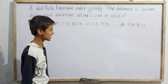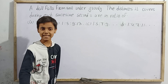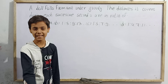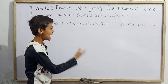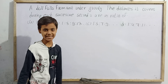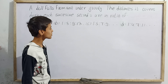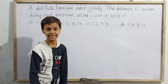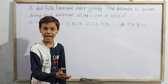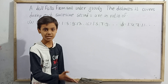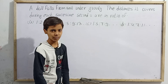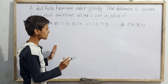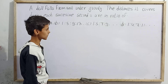We can solve this using two methods. The first is Galileo's trick — you can apply it directly and find the answer quickly. The second is by applying the equation for Sₙth, which is: u plus g by 2 times (2n minus 1). Let's first try by Galileo's trick.